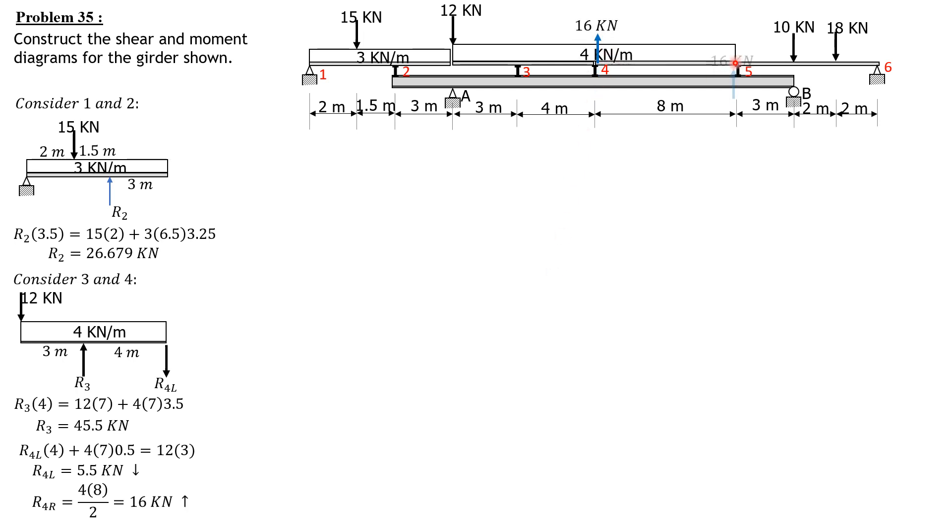Lastly, consider 5 and 6. Summation of moments about 6 equals zero, clockwise positive. R5 right times 0.5 times 7 equals 18 times 2 plus 10 times 4. So R5 right is 10.857, upward.